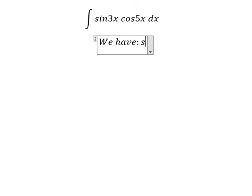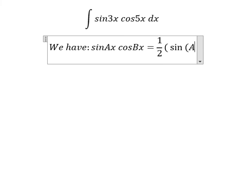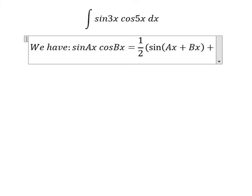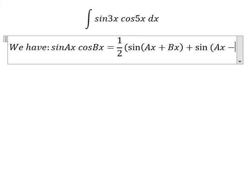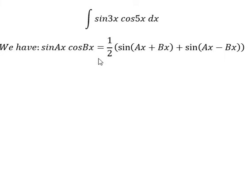The formula is: sin(Ax) cos(Bx) equals one-half times [sin(A+B)x + sin(A-B)x]. So we will apply this formula for this problem here.